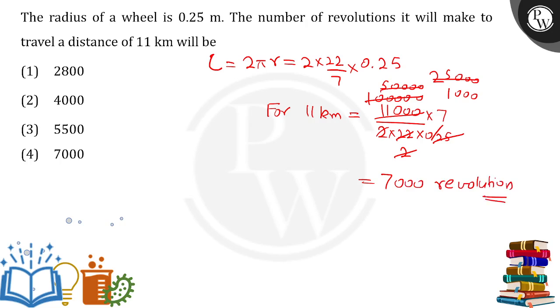Once again: in one revolution, this distance was covered. For 11 kilometers, we divide the total distance by what has been covered in one revolution, and we get the total number of revolutions. That is our answer, option 4.